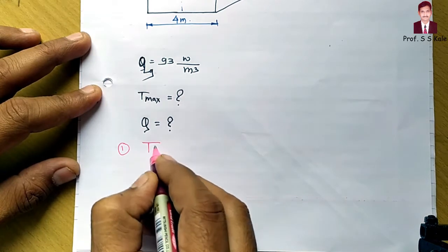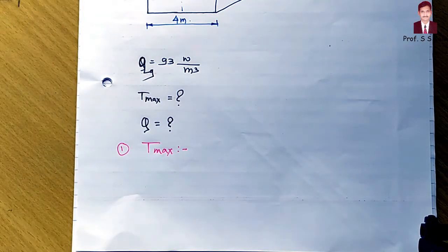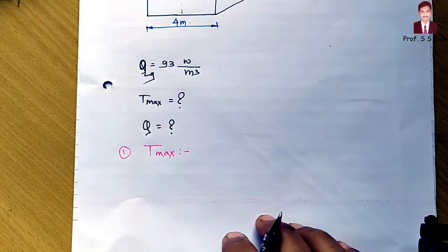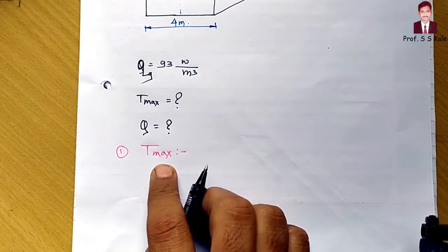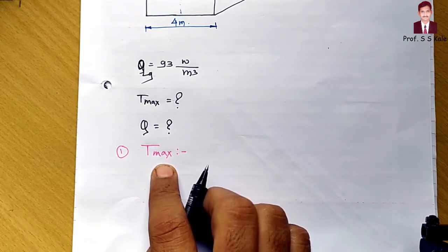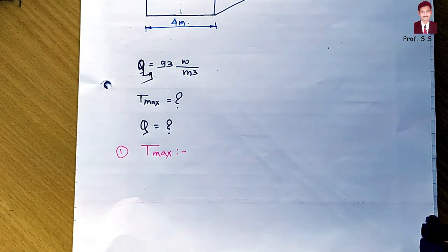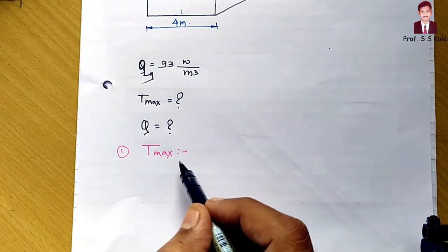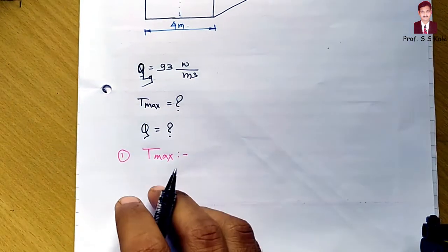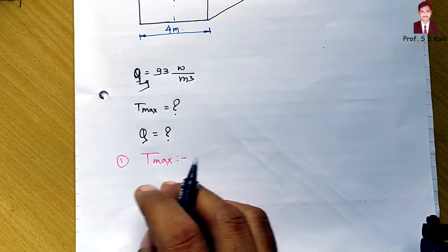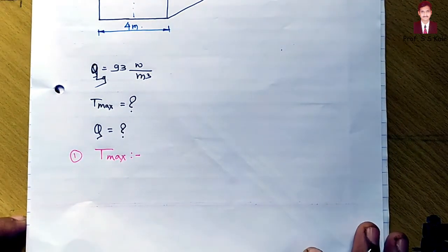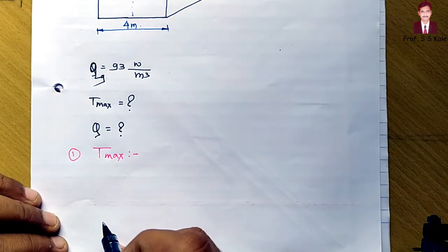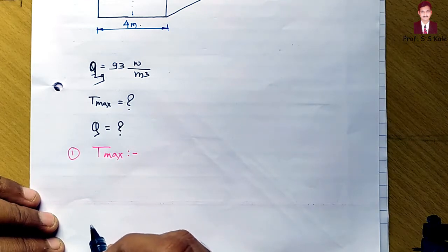Let's focus first on determining T_max. In the last video I derived an equation for T_max, so if you can remember that particular equation directly, you can plug in all the values and determine T_max. But that equation is quite complicated to remember. If it is not possible to remember that equation, then what we will do is derive the temperature equation within the problem itself and put in the appropriate value of x to get T_max.